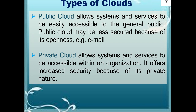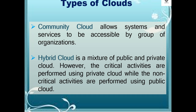The types of clouds are as follows. First, the public cloud allows systems and services to be easily accessible to the general public, but may be less secure because of its openness, like email. The private cloud allows systems and services to be accessible within an organization, offering increased security because of its private nature. The community cloud allows systems and services to be accessible by a group of organizations. The hybrid cloud is a mixture of public and private cloud — critical activities are performed using private cloud while non-critical activities use public cloud.